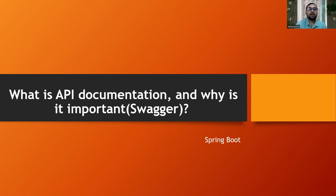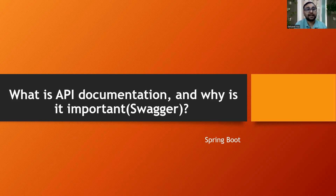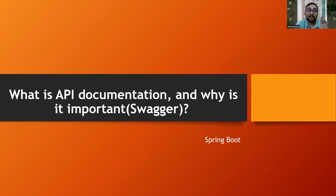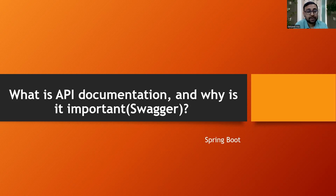Questions can also come on Swagger. Swagger is basically for documenting your API — it shows how a GET mapping looks, what fields are in a POST mapping endpoint, what that API endpoint does when you hit a particular URL, and what the response status codes are. Questions can include: how do you set up Swagger in your project, what's the importance of Swagger, and how do you create documentation with Swagger?